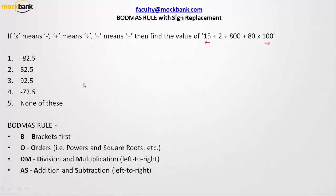The problem given says: if multiplication means negative, positive means division, and division means addition, then find the value of the expression. The problem also states that multiplication is subtraction, addition means division, and division means addition. The first step is to replace the signs.